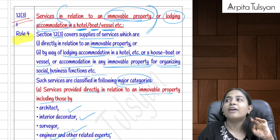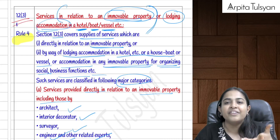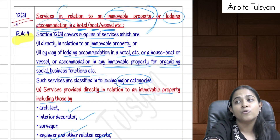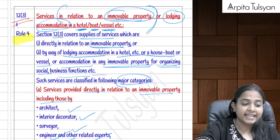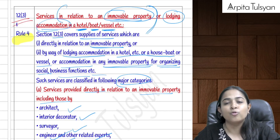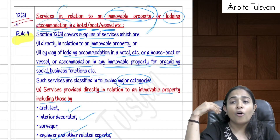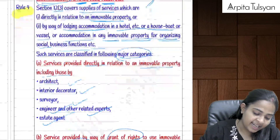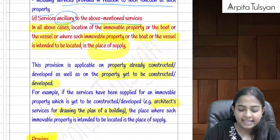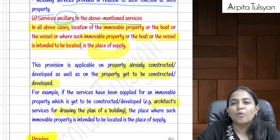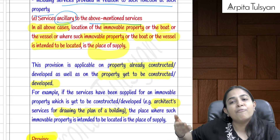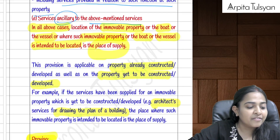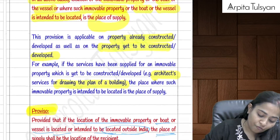Section 12(3) covers services related to immovable property: services by architects, interior decorators, engineers, surveyors; real estate services; services giving right to use immovable property for events or functions; lodging/accommodation in hotels, guesthouses, clubs, campsites, houseboats; and services for conducting marriages or office functions in immovable property. In all these cases, the place of supply is where the immovable property is located or intended to be located.